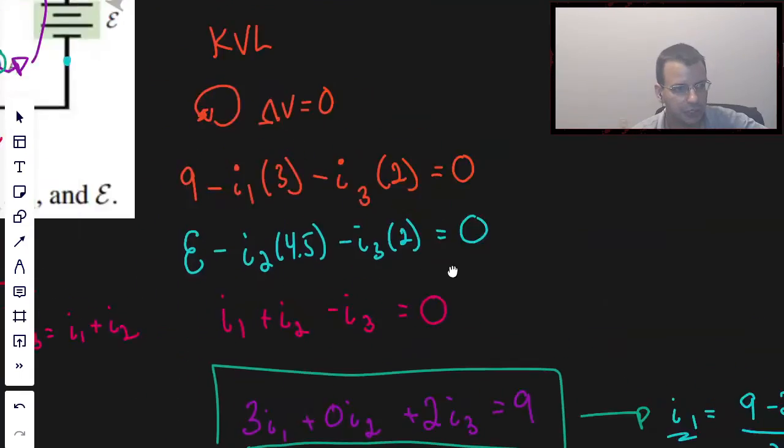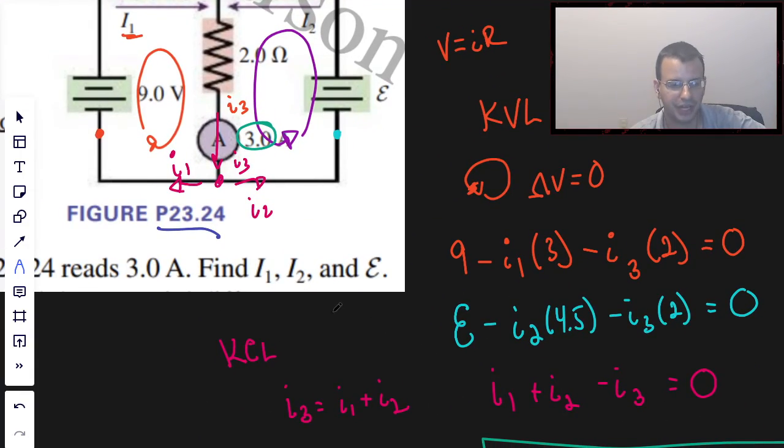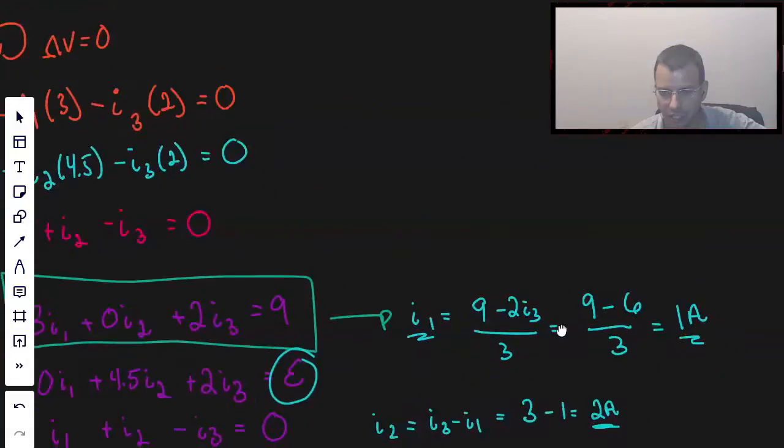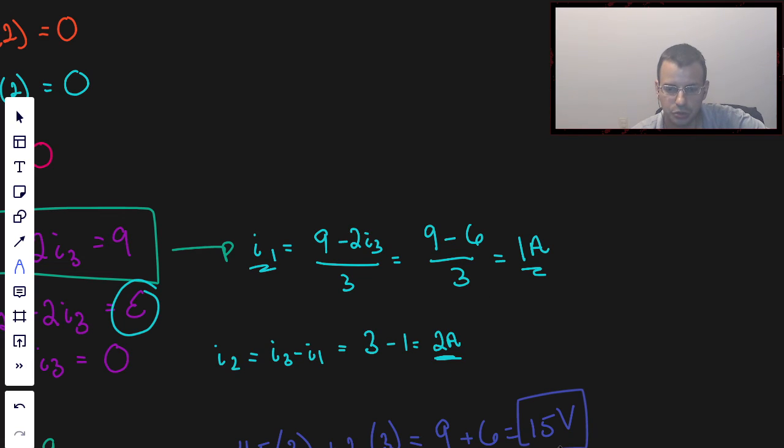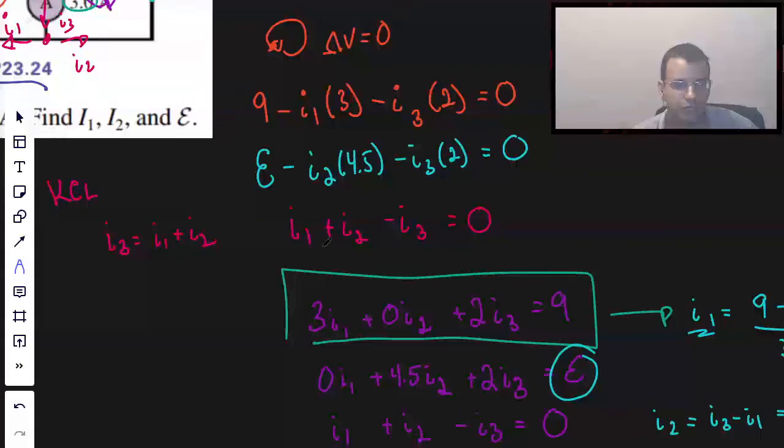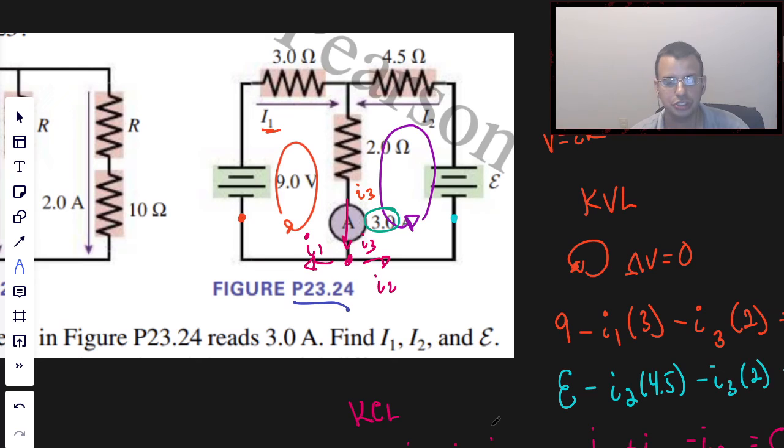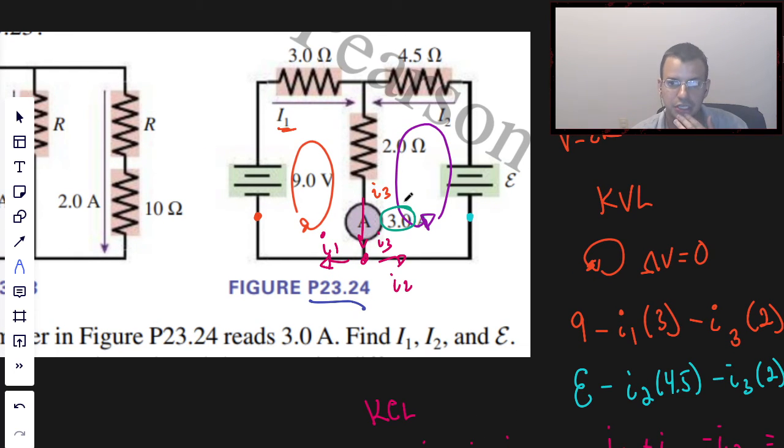That's pretty much it. Is that what we wanted? Do we want to find epsilon? We want to find I1 and I2 as well, which we did, just along the lines. So 1A, 2A and 15V. So the way we did this, this one wasn't too bad. We had this circuit. First thing you want to do is you want to reduce it down to a simple circuit, just a battery and a resistor.